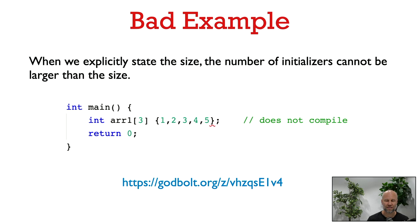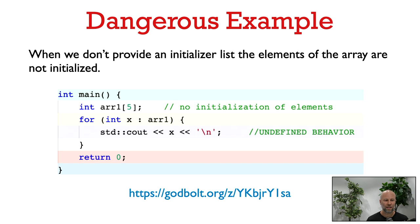Let's look at some bad examples. If we explicitly put the size of the array, then the number of initializers cannot be larger than that size. So this example here is an error and it does not compile. If we don't provide any initializer list at all — not even an empty one — then the memory for the array is going to be allocated, but the elements of the array are not going to be initialized. They're just going to take on values interpreted from whatever was sitting there in the memory already. That means that accessing these elements results in undefined behavior. Just like if you say int x; and don't give it an initial value, it's uninitialized — the same thing with an array if you don't give it some initial values.